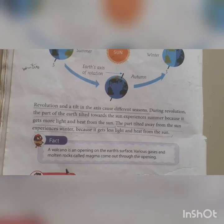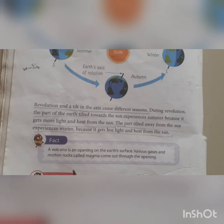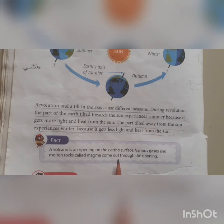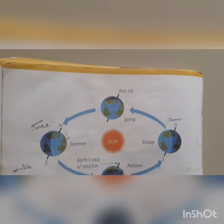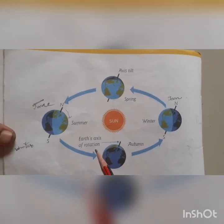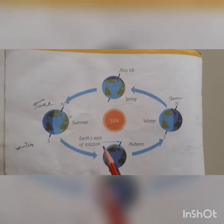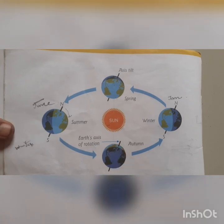A volcano is an opening on the earth's surface through which various gases and molten rocks called magma come out. Now, to summarize: revolution causes seasons to change, and rotation causes day and night to change.